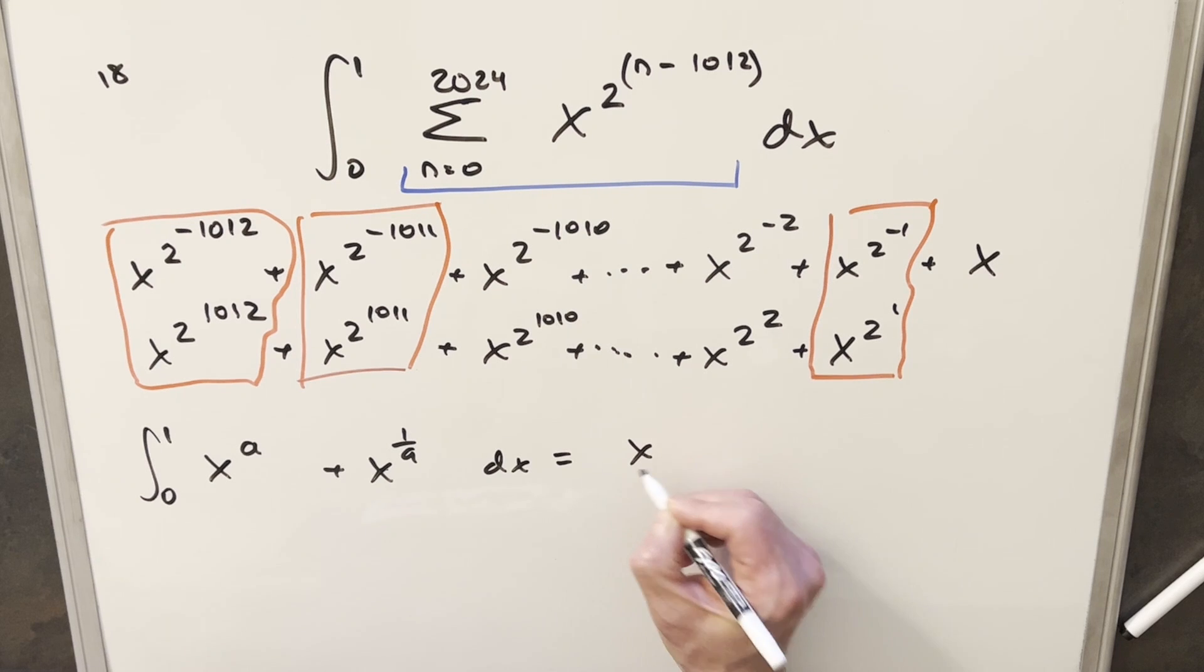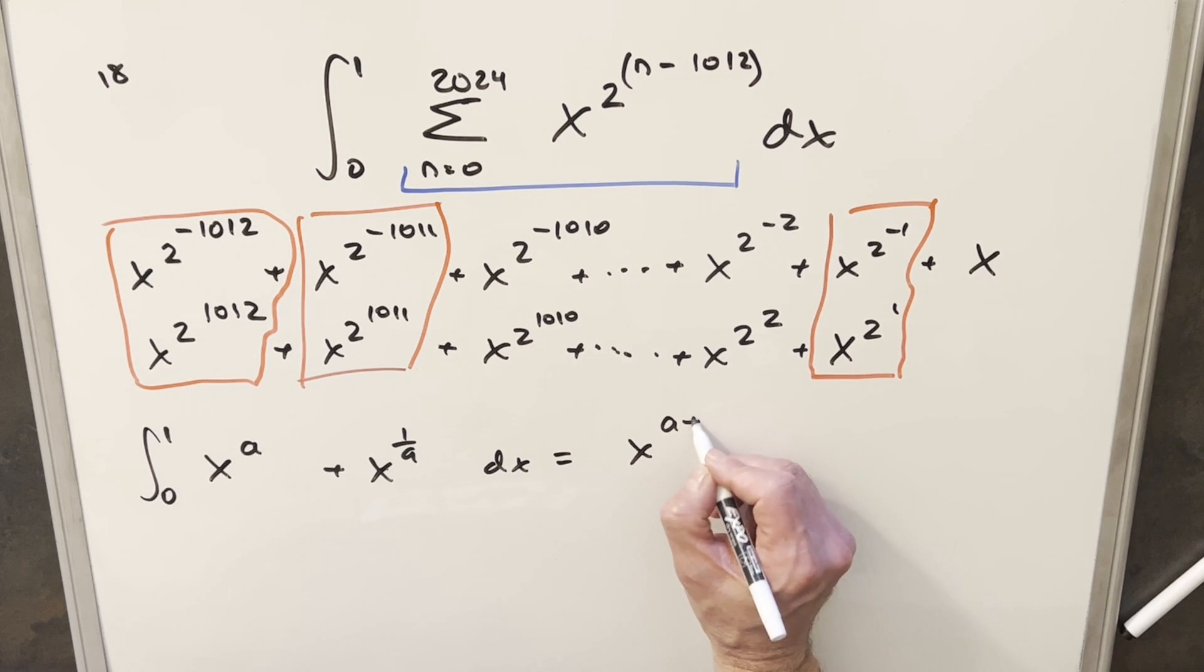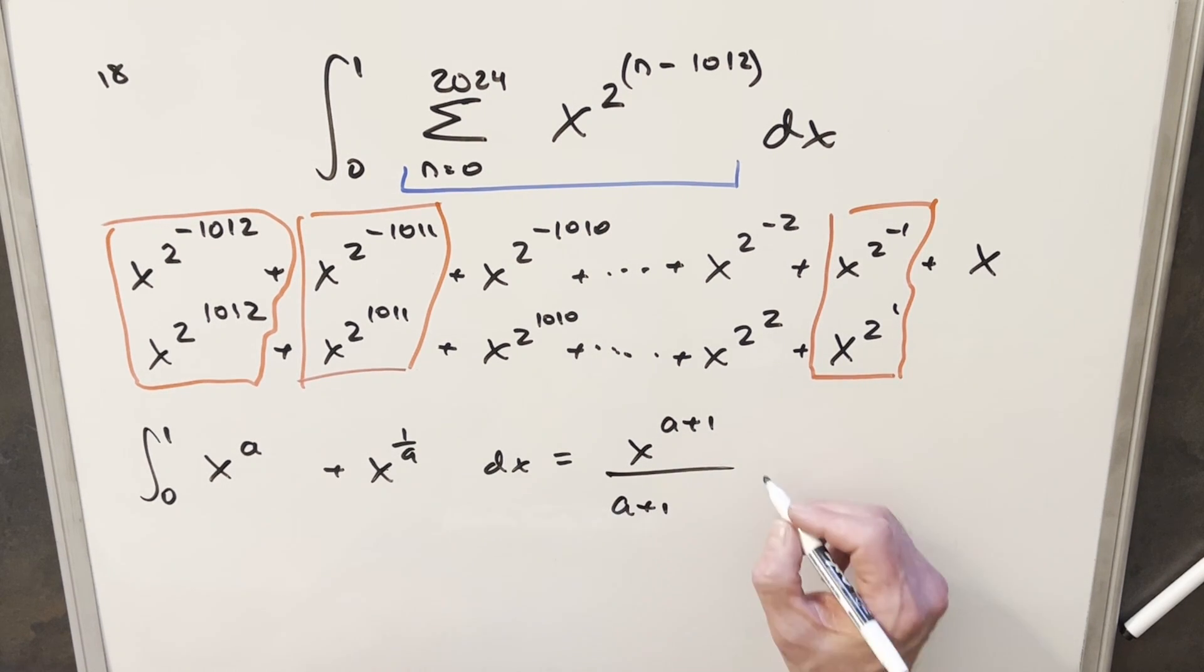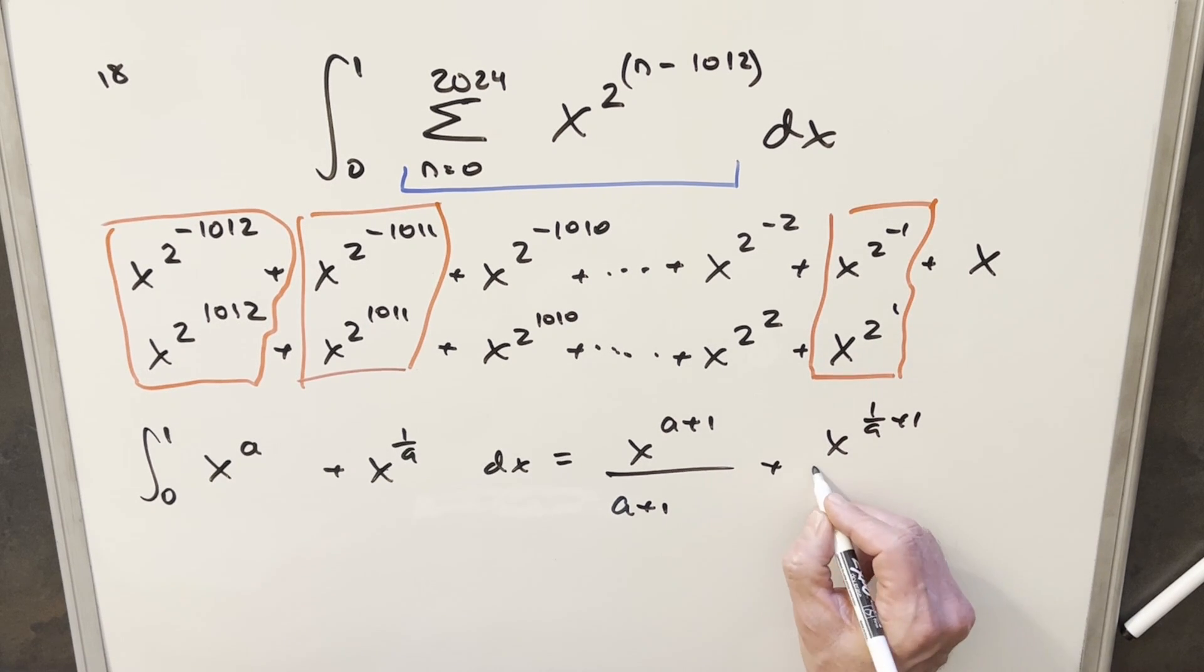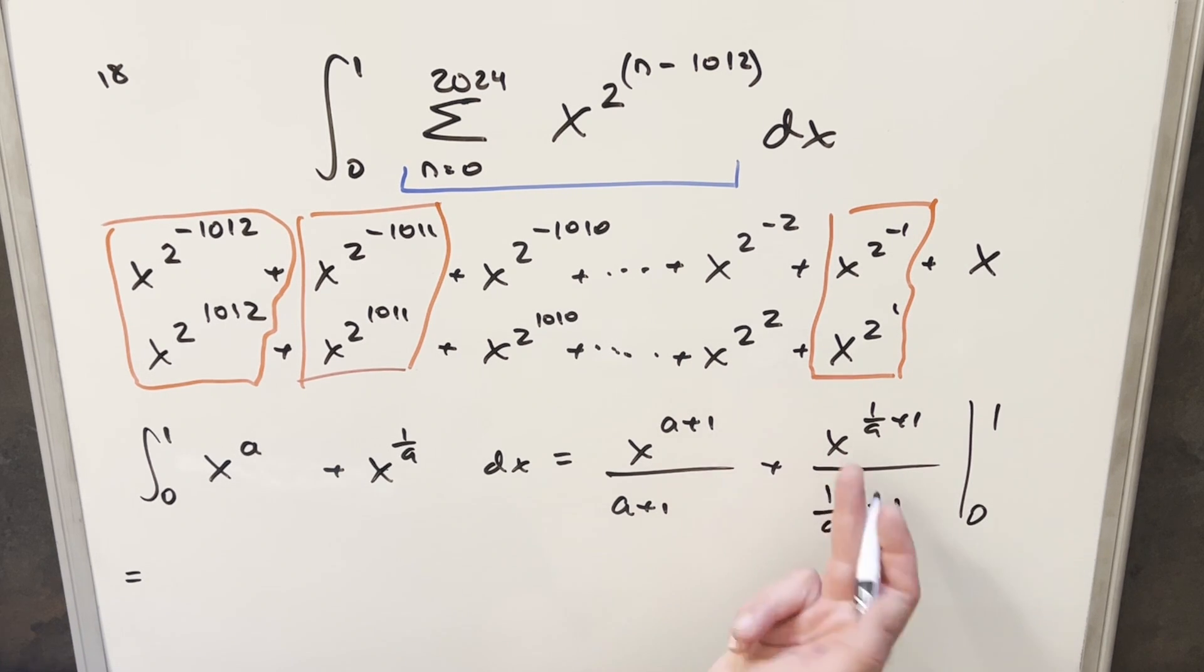So integrating this first one, we're going to have x to the a plus 1 over a plus 1. And for the second one, we're going to have x to the 1 over a plus 1 over 1 over a plus 1. Now we'll go ahead and evaluate this. When we plug zero in here with x's in the numerator, everything's zero. So all we need to do is plug in 1. But 1 to anything is 1. So for the first term, we just end up with 1 over a plus 1. And again, this is also going to be 1 in the numerator. This is going to be 1 over 1 over a plus 1.